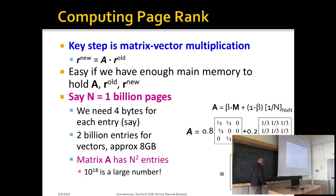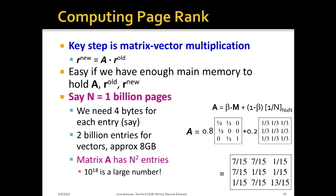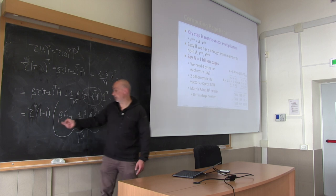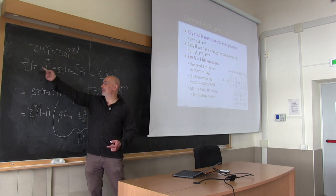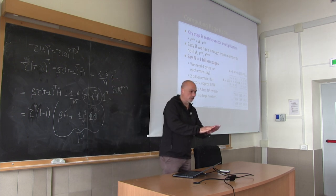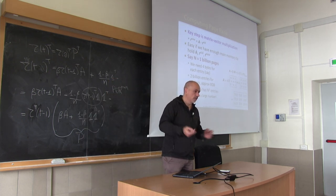So, how do we actually compute PageRank? It seems we need to keep in memory just two vectors — the old and the new — at any point in time, each with n entries. Assume 20 billion pages with 32 bits per entry: two vectors of 20 billion entries each gives 40 billion entries, so about 160 gigabytes.